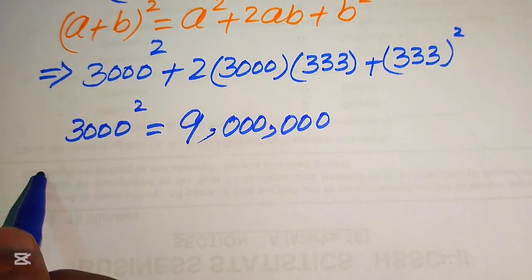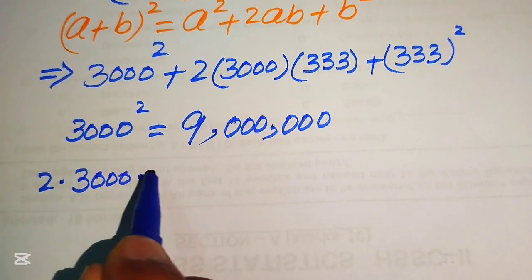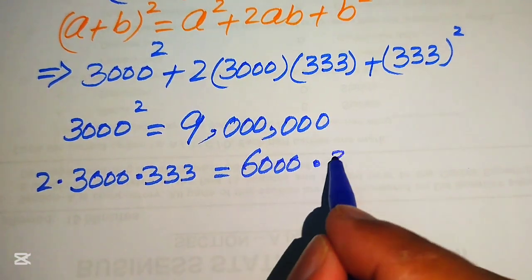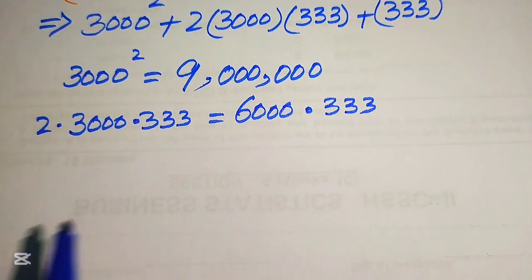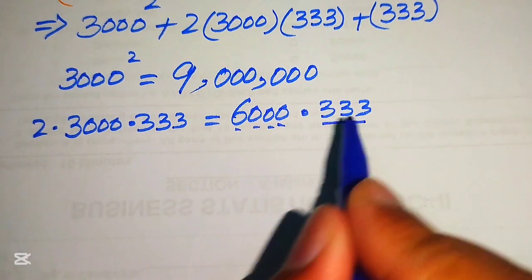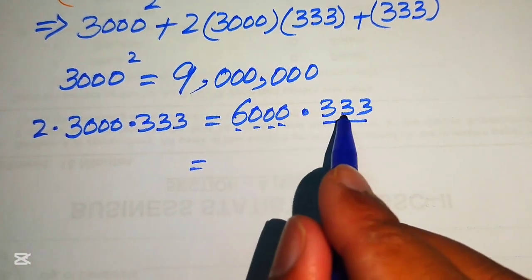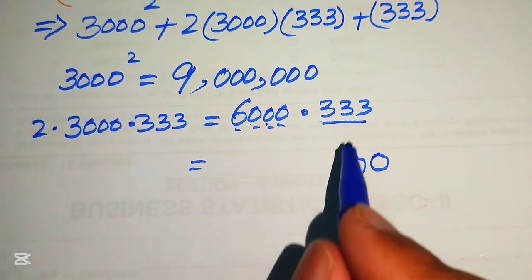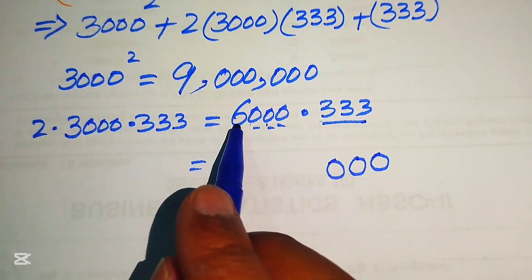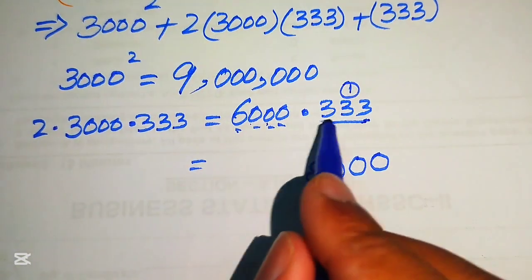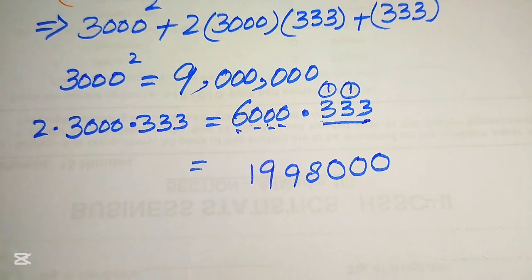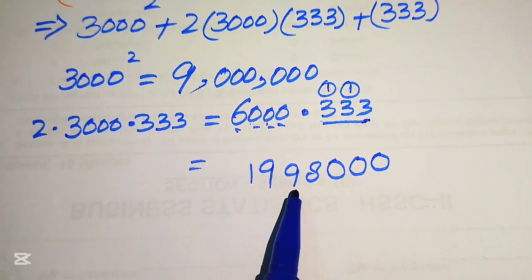For the middle term, 2 times 3000 times 333: first 2 times 3000 equals 6000, then we multiply 6000 by 333. Multiplying digit by digit: 6 times 3 is 18, carry 1; 6 times 3 is 18 plus 1 is 19, write 9 carry 1; 6 times 3 is 18 plus 1 is 19. The result is 1,998,000.